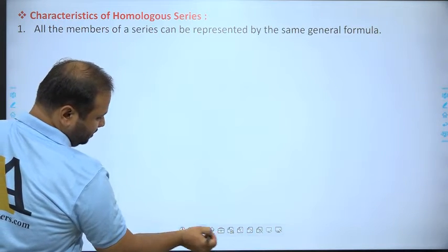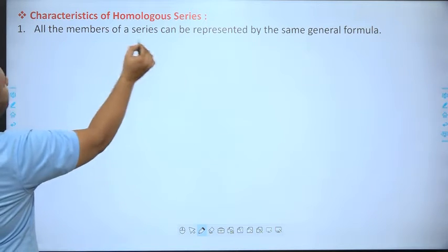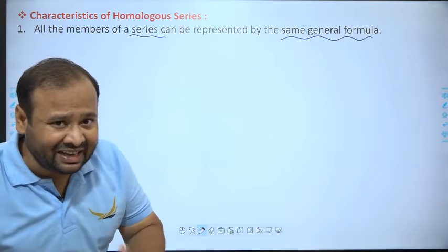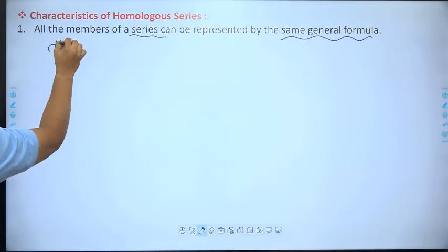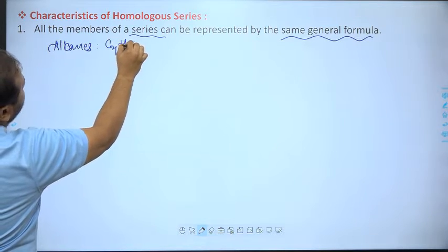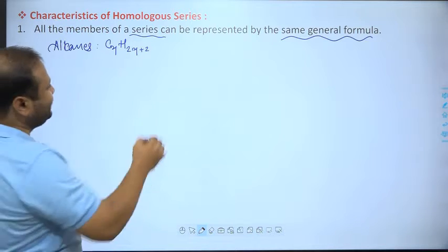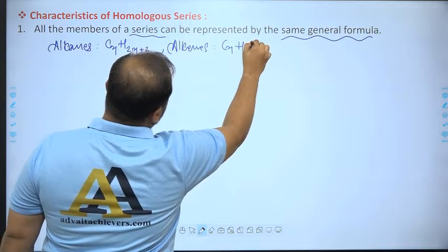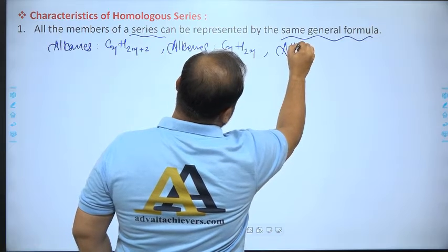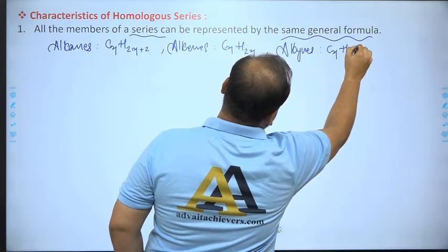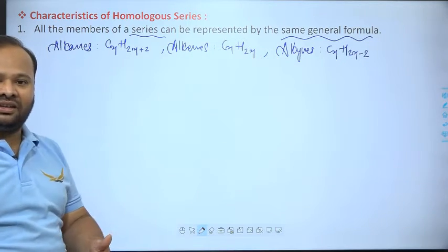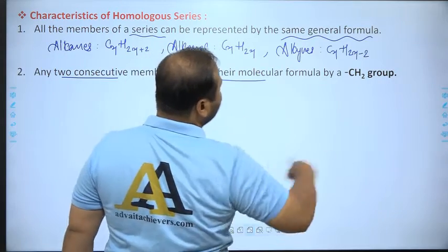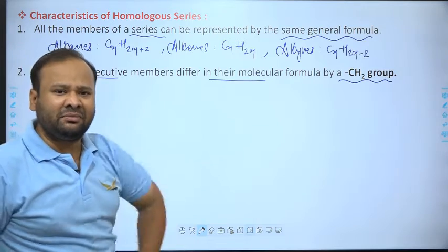Now the characteristics of the homologous series. First: all the members of the series can be represented by the same general formula. For alkanes, GF is CnH(2n+2). For alkenes, GF is CnH(2n). For alkynes, GF is CnH(2n-2).